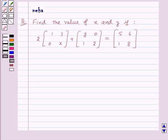Hi and welcome to the session. Today we will discuss the following question which says find the value of x and y if 2 into a 2 by 2 matrix whose elements are 1, 3, 0, x plus another 2 by 2 matrix whose elements are y, 0, 1, 2 is equal to a 2 by 2 matrix with elements 5, 6, 1, 8.